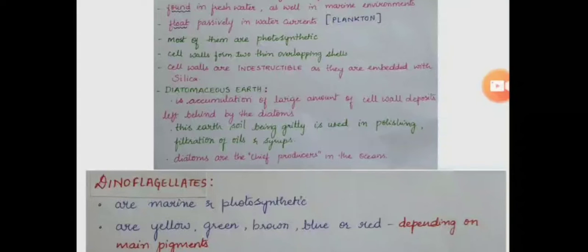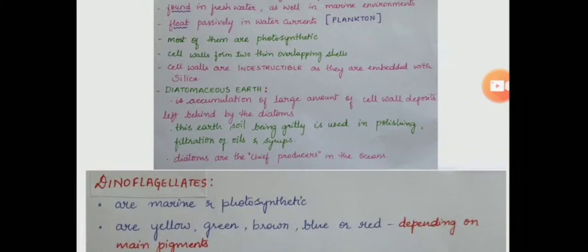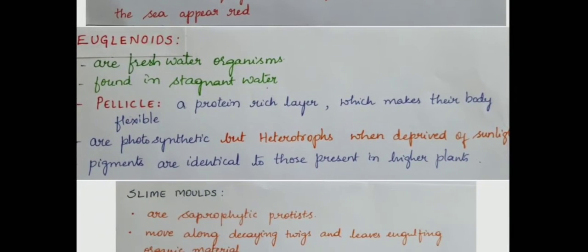So, under Kingdom Protista, we have chrysophytes, dinoflagellates, euglenoids and slime molds.